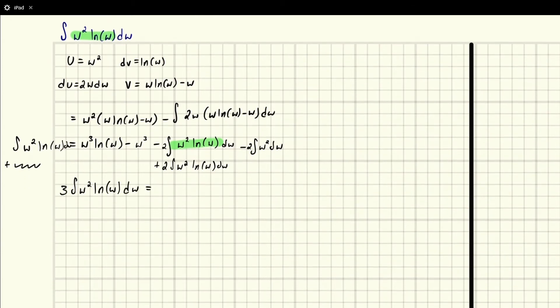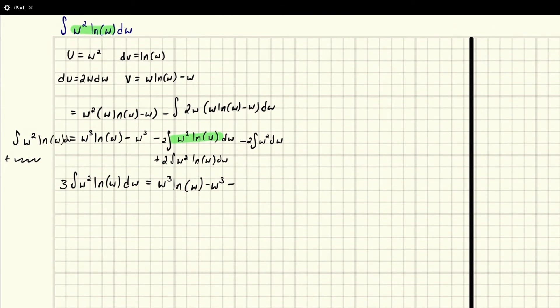Equals w cubed natural log of w minus w cubed. And then this integral over here, this is an easy integral, right? We're just going to add 1 and divide by what we get. So we're going to have w cubed over 3.